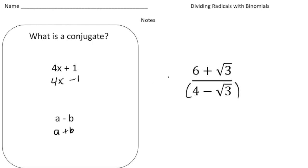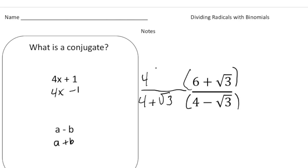So we're going to multiply both sides by the conjugate of 4 minus the square root of 3, which is going to be 4 plus the square root of 3. Now keep in mind these are binomials, not monomials. So in order to multiply these, we have to use FOIL. This is where things get a little bit tricky.